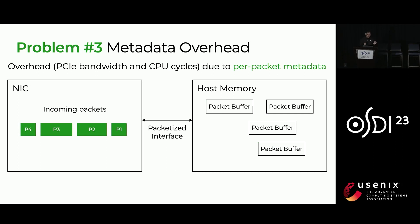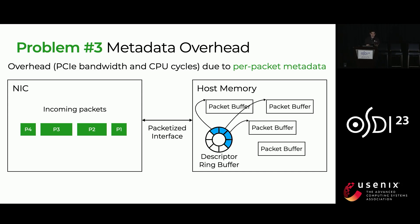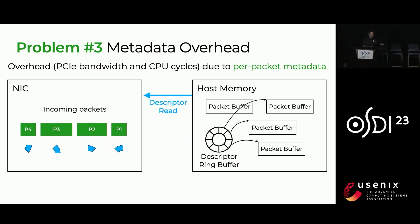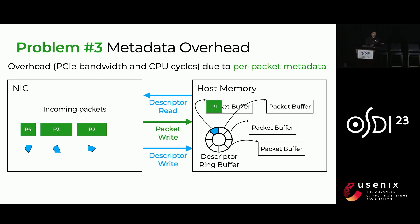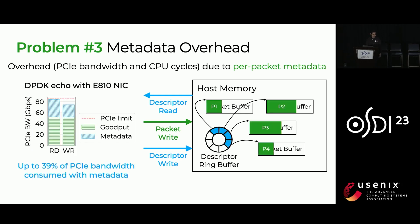The last problem is the metadata overhead. The packetized interface uses not only these packet buffers, but also a descriptor ring buffer to synchronize buffers with the NIC. So even before software receives any packet, it needs to post these buffers to the NIC. The NIC then needs to read these descriptors, and for every packet, the NIC first needs to write a packet but also needs to write a descriptor to tell software that the packet arrived. As a result, we see a lot of bandwidth being used with metadata over PCIe, and also a lot of CPU cycles spent processing this metadata.